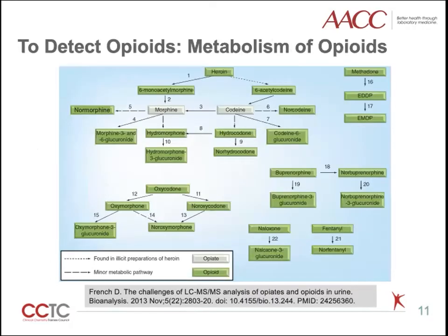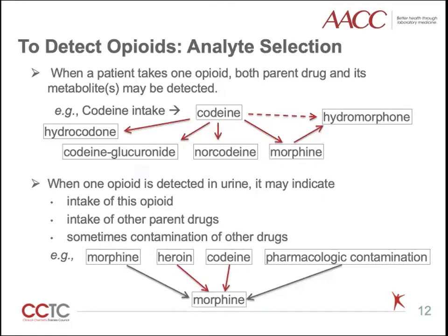The metabolism of opiates is complicated but crucial for test selection and result interpretation. Opiates are metabolized to active or inactive metabolites through demethylation, glucuronidation, deacetylation, hydroxylation, and so on. Both parent drugs and metabolites can be excreted into urine. To choose which drug to use as an analyte for drug detection depends on the metabolism pathway, the speed, and clinical needs. For most opiates, both parent drugs and primary metabolites are used as analytes for detection. When a patient takes one opiate, both the parent drug and its primary metabolites can be detected.